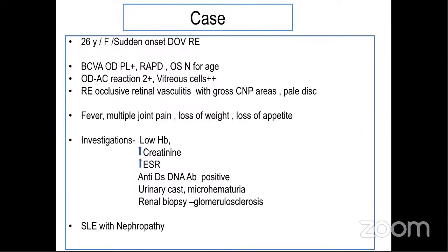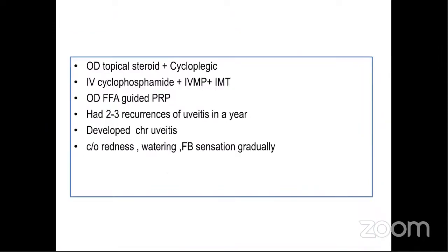Her investigations revealed low hemoglobin with increased creatinine, increased ESR, anti-ds DNA antibody positive, pulmonary examination with microhematuria, and renal biopsy showing renal involvement. So we were dealing with a patient of systemic lupus with nephropathy.